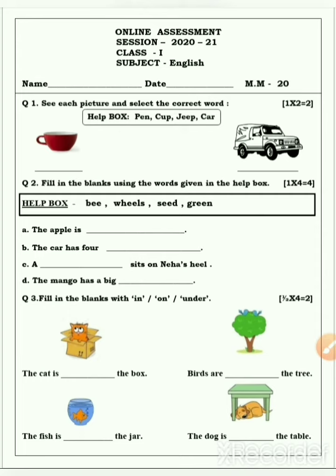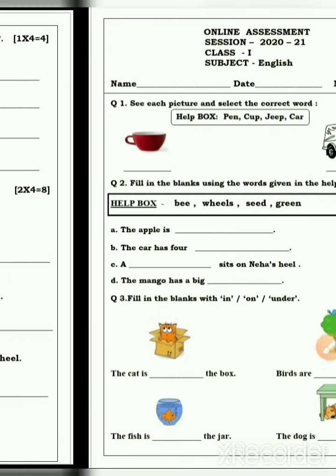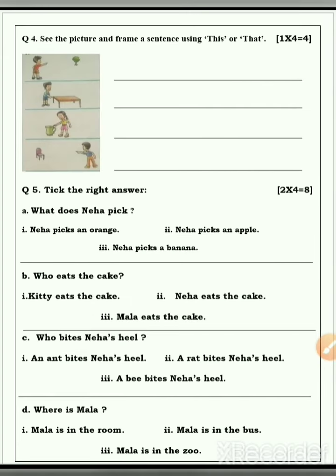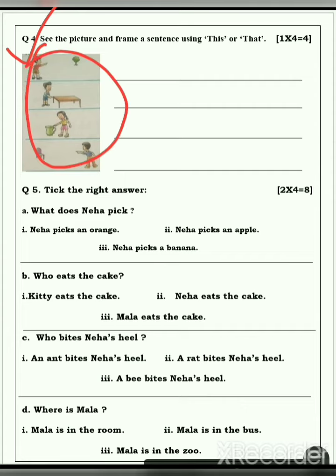Now see the next page. Question number 4: See the picture and frame a sentence using this or that. It means, yeh jo pictures hai, yeh pictures dekho, aapko sentence frame karna hai this or that se. Understood?